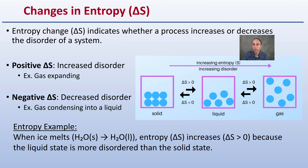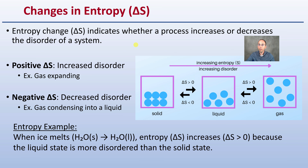A positive entropy means there is increasing disorder, such as a gas expanding — you can see this on the right. A negative delta S, or negative entropy, is a decrease in disorder. Moving to the left in the diagram, this corresponds to gas condensing into a liquid, as an example.